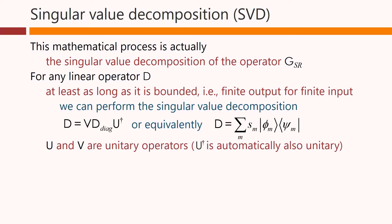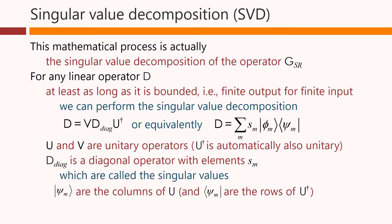U and V here are unitary operators, that is, power conserving operators, if you like. D_diagonal here is a diagonal operator with the elements S_m. And these are called the singular values. The ψ_m are the columns of U, and the φ_m are the columns of V.